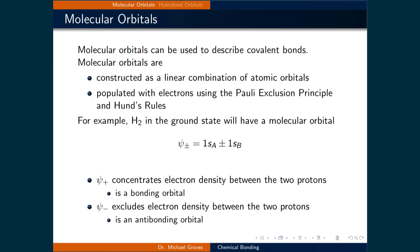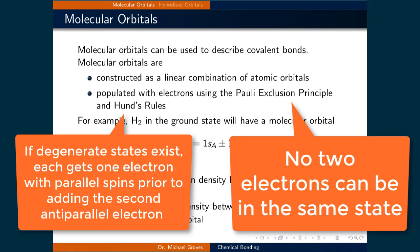Molecular orbital theory is one dominant theory used to describe covalent bonds. Molecular orbitals are constructed as linear combinations of atomic orbitals. This means that we can simply take the wave function solutions to the Schrödinger equation for atomic orbitals and add and subtract them to make molecular orbitals. These molecular orbitals are populated with electrons using the Pauli Exclusion Principle and Hund's rules.